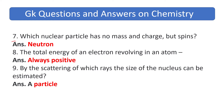Which nuclear particle has no mass and charge but it spins? The answer is neutron. The total energy of an electron revolving in an atom is always negative. By the scattering of which rays can the size of the nucleus be estimated? The answer is alpha particle.